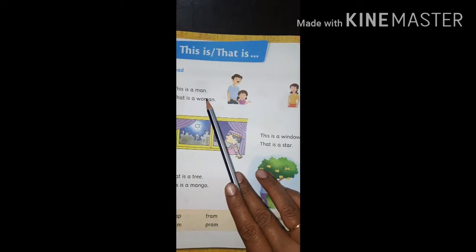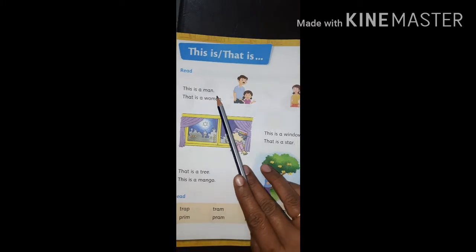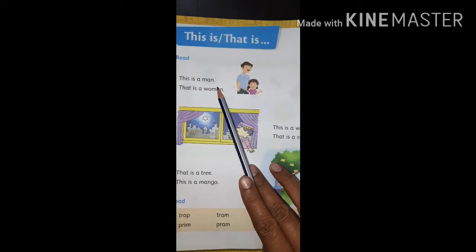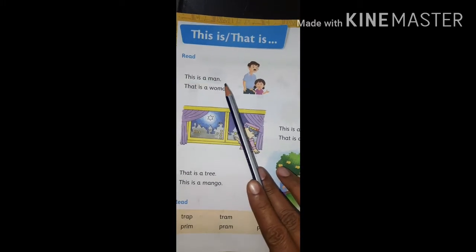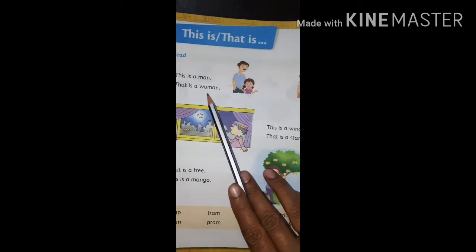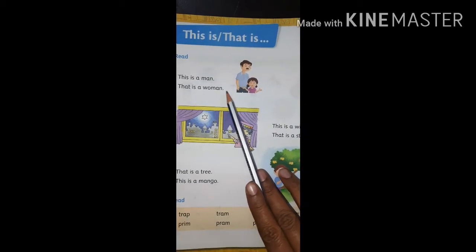Students, those things that are near, we use 'this is.' Those things that are far, we use 'that is,' okay?